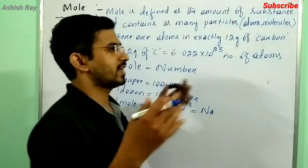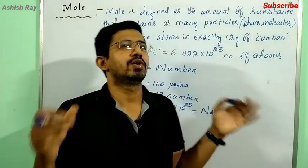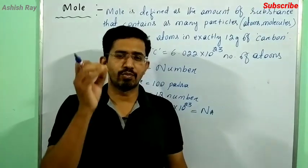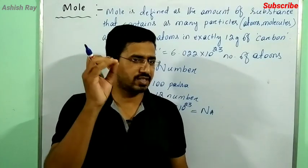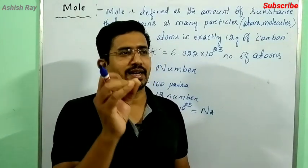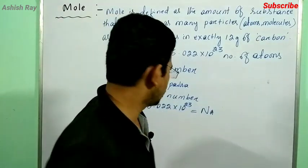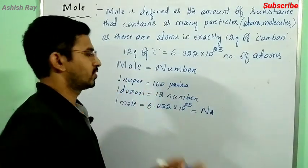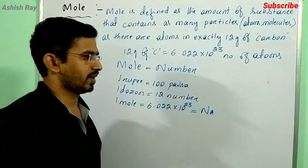12 grams of carbon contains the same 6.022 into 10 to the power 23 number of atoms. So once again: mole is nothing, mole is just a number, and that is equal to 6.022 into 10 to the power 23.